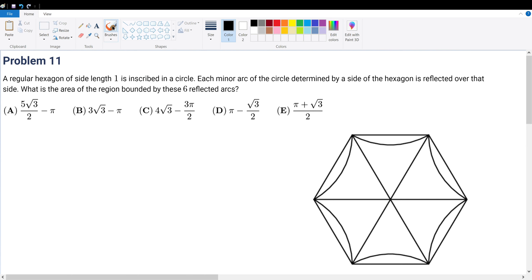AMC 10b 2021 problem 11: A regular hexagon of side length 1 is inscribed in a circle. Each minor arc is determined by the side of a hexagon reflected over, and you're trying to find the region bounded by the six reflected arcs. So to bound a region, if I have like boom boom boom boom, the bounded region is within it. With that interpretation, the region that we're trying to solve for is this region right here.